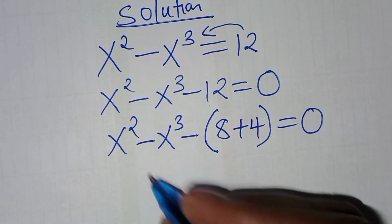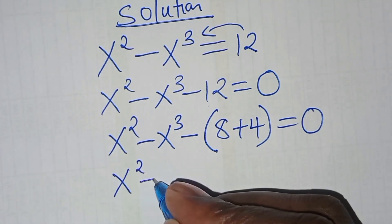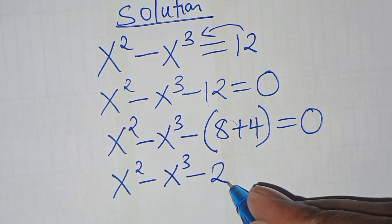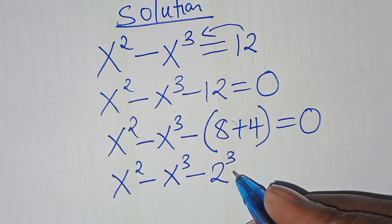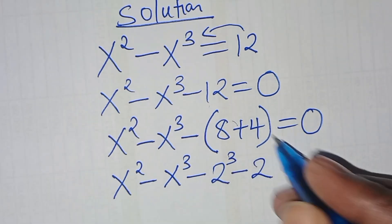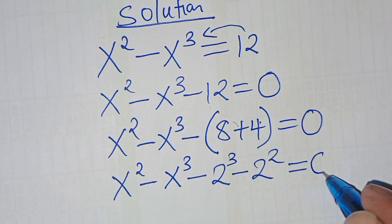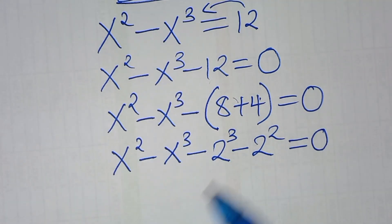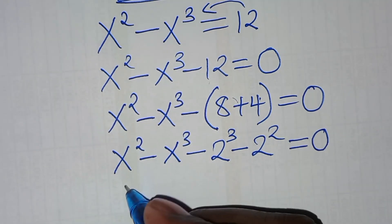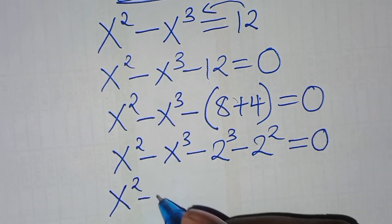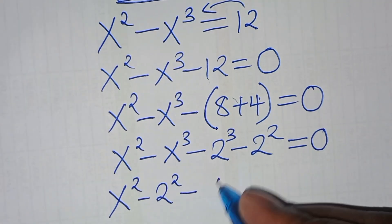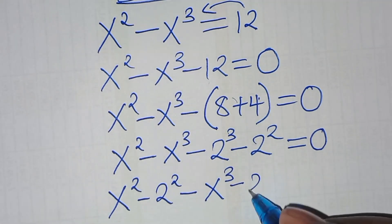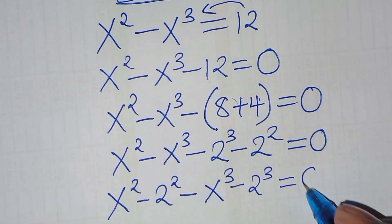From here, we have x to power 2 subtract x to power 3, subtract 8, which we can express as 2 to power 3, then subtract 4, which is 2 to power 2, then this is equal to 0. Now we have x to power 2 and 2 to power 2, so let's combine: x to power 2 subtract 2 to power 2, then subtract x to power 3 subtract 2 to power 3, this is equal to 0.